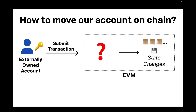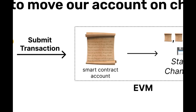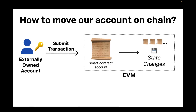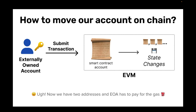So what if we wanted to move our account on-chain, so we're not holding all of our funds inside of an externally owned account? What we would do is put a smart contract account on-chain, so that when we have an externally owned account we could submit a transaction to the account on-chain, and then it could interact with something like Uniswap to make state changes on behalf of the smart contract account. The big downside is that we still have this externally owned account that needs to pay for gas using its own funds, and we also have to keep track of the smart contract account — even though the majority of our funds are stored there.